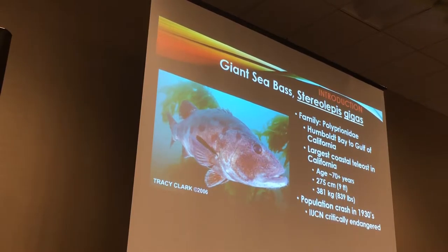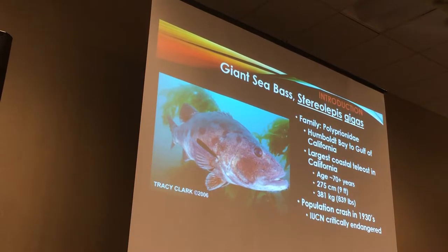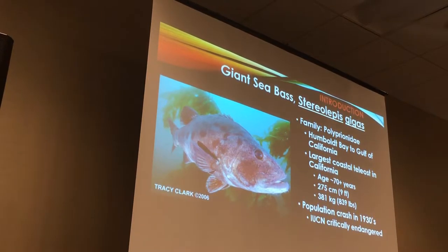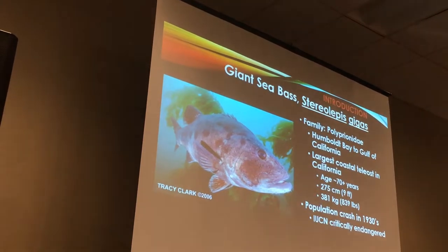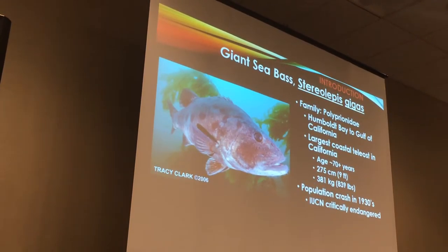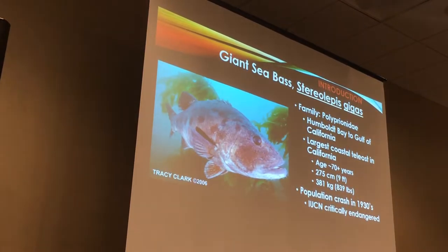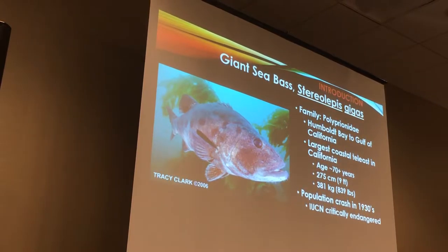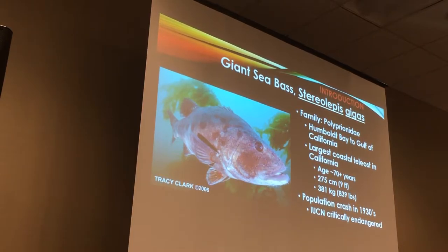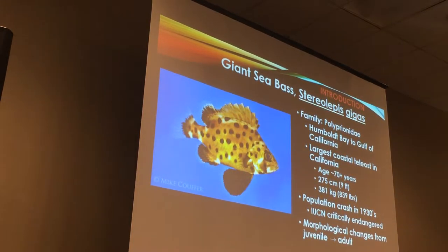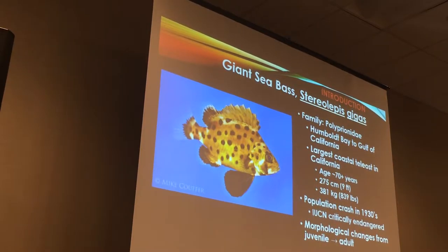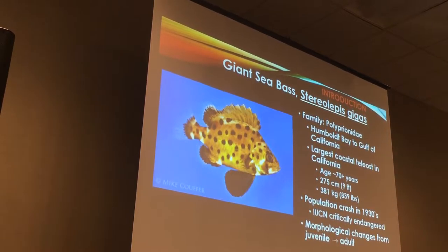One of the largest ones ever recorded was up to 2.7 meters — so almost 9 feet — a very large fish. These large fish are obviously targets for fisheries, including both commercial and recreational fisheries, causing their decline in the early 1930s and eventually placing them on the IUCN critically endangered red list. We also know a little bit about their morphological changes from juvenile stages to adult stages — this cute little juvenile right here looks vastly different from the larger adults.